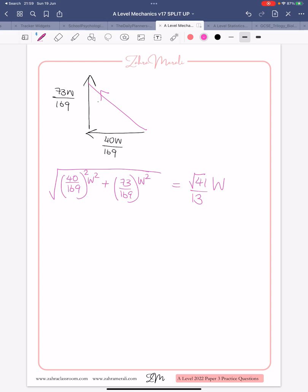And then, it asks me for the angle, so it wants me to calculate this angle here. So, theta is going to be 73W, so tan theta is going to be opposite over adjacent. So, 73W over 169, it turns into a times, but let's write it out first, divided by 40W over 169.